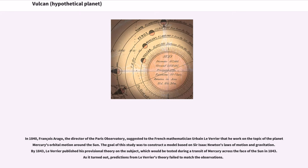In 1840, François Arago, the director of the Paris Observatory, suggested to the French mathematician Urban Le Verrier that he work on the topic of the planet Mercury's orbital motion around the Sun.